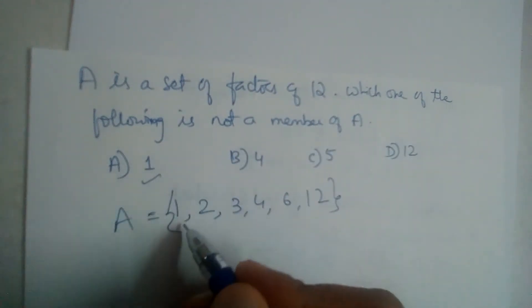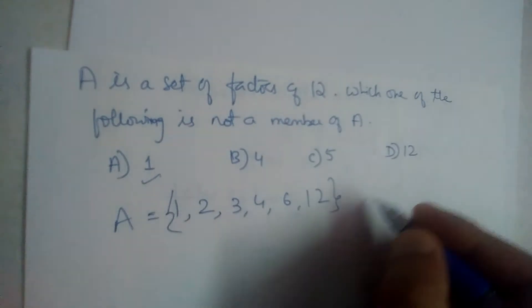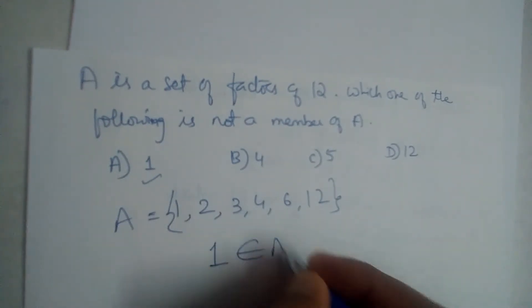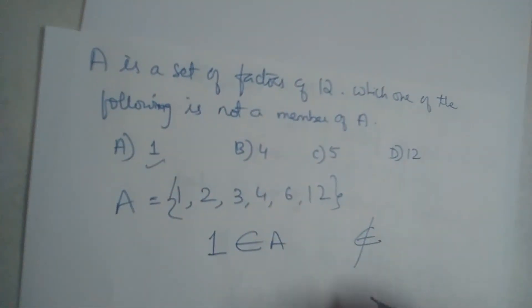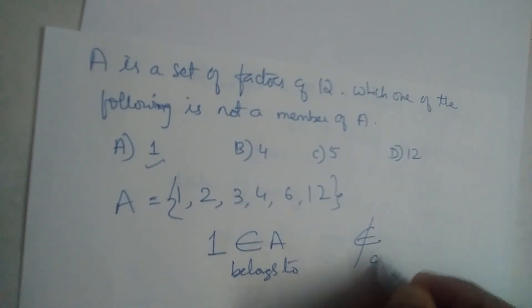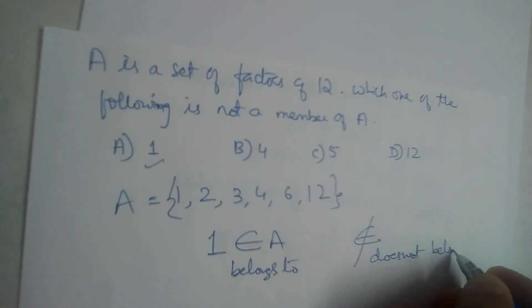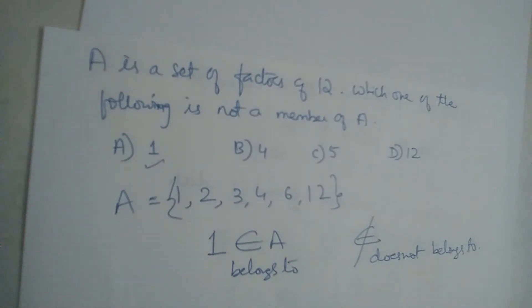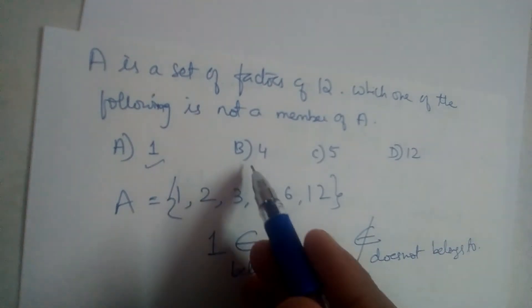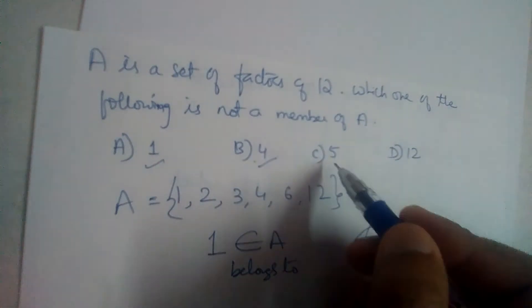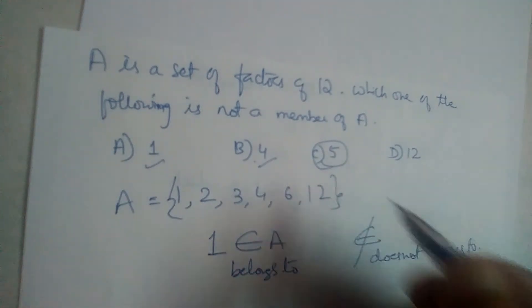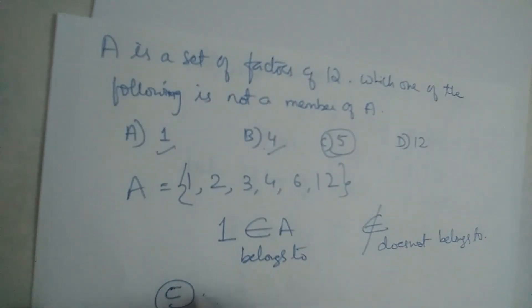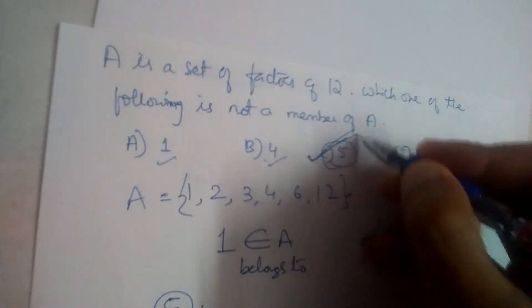Now, the symbol ∈ means 'belongs to' and ∉ means 'does not belong to'. Checking each option: 1 belongs to A, 4 belongs to A, 5 does not belong to A, and 12 belongs to A. So the answer is option C — 5 is not a member of A.